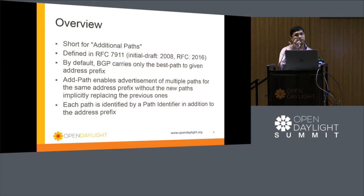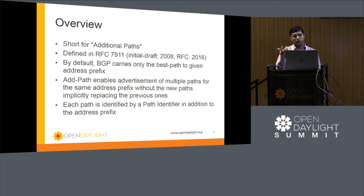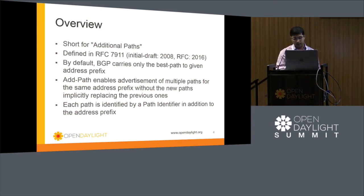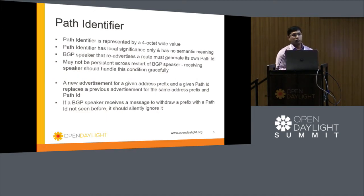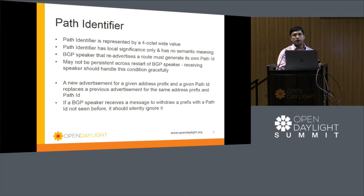A path is nothing but the set of path attributes associated with the prefix. In classic BGP without additional paths, there can be only one prefix advertised, so paths can be indexed based on the prefix. But with ADPATH, since there could be multiple paths associated with a given prefix, a new entity called the path identifier has been introduced. This path identifier is a four-octet value which is part of the NLRI. It is an opaque value with no inherent significance — it is generated by the BGP speaker advertising the additional paths, and these values are not persistent across reloads.